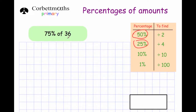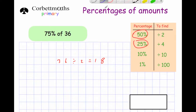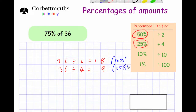Next: work out 75% of 36. We're going to use two building blocks: 50% and 25%. For 50%, divide by 2: 36 ÷ 2 = 18. For 25%, divide by 4: 36 ÷ 4 = 9. To get 75%, add those together: 18 + 9 = 27. So 75% of 36 is 27.